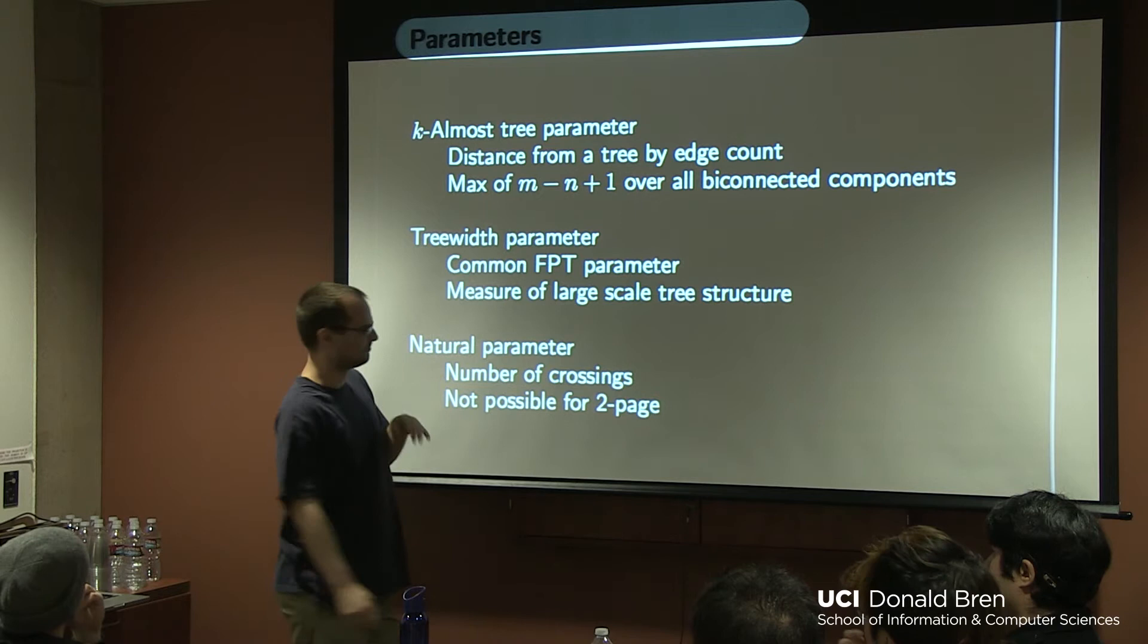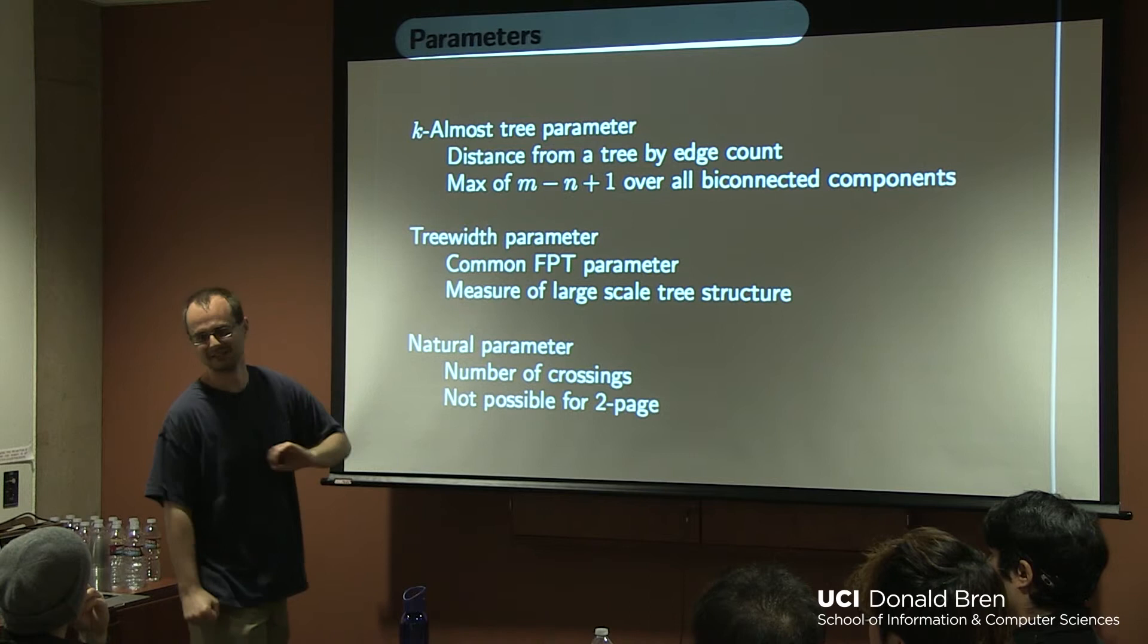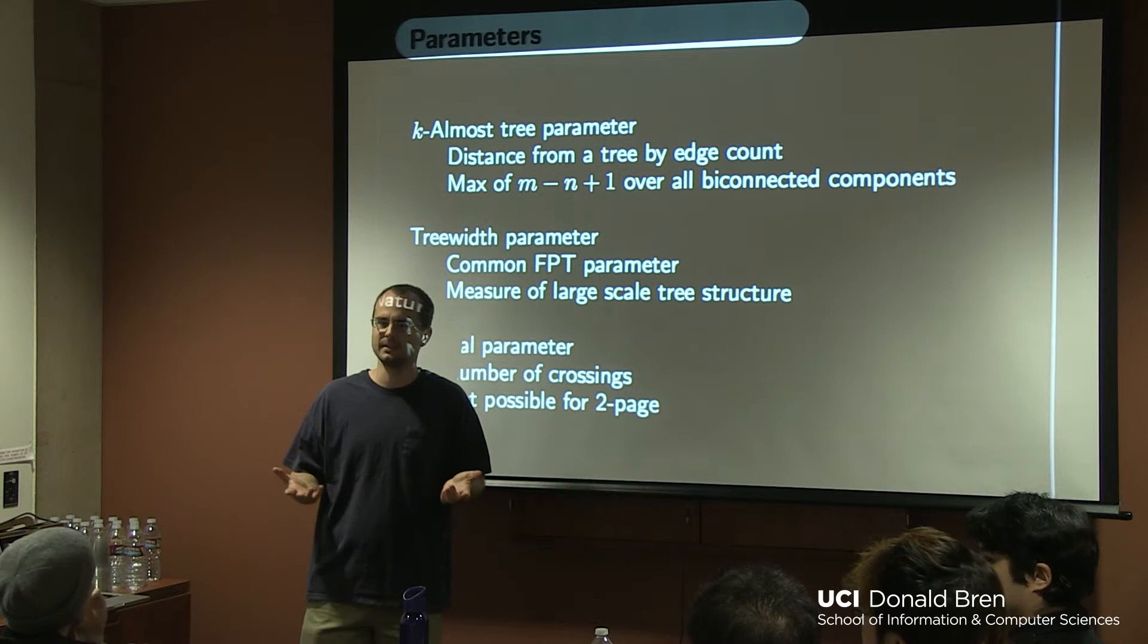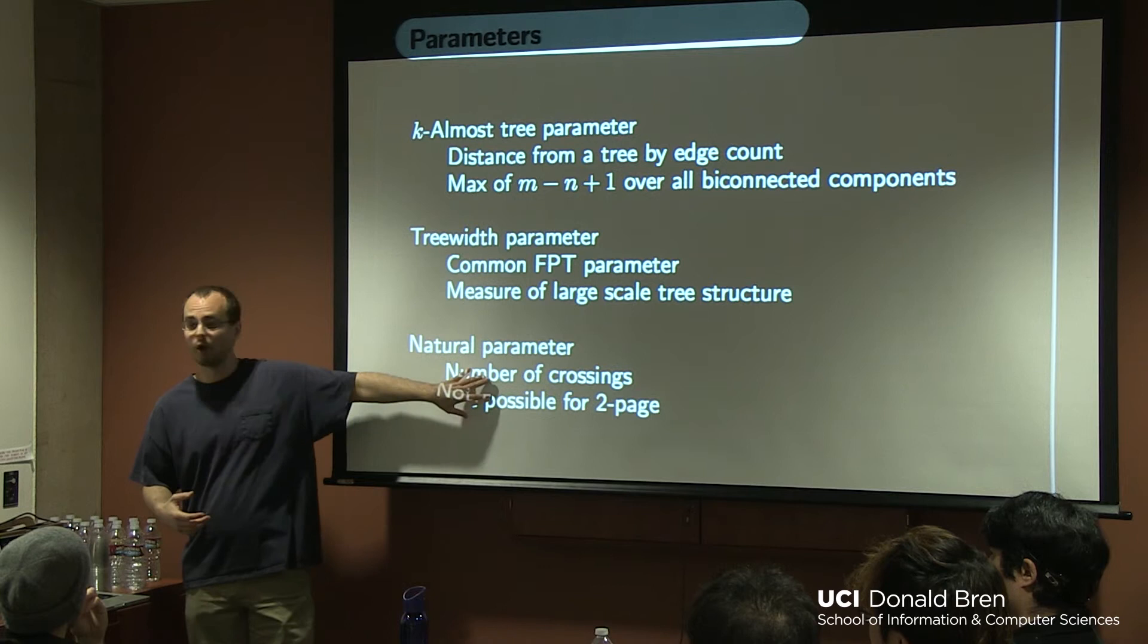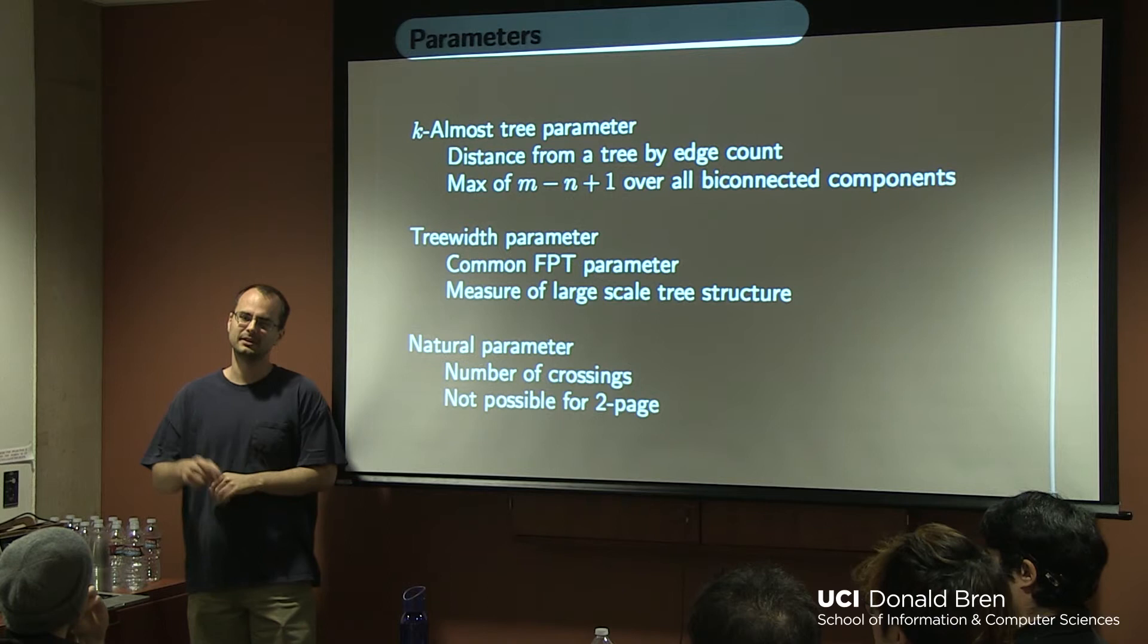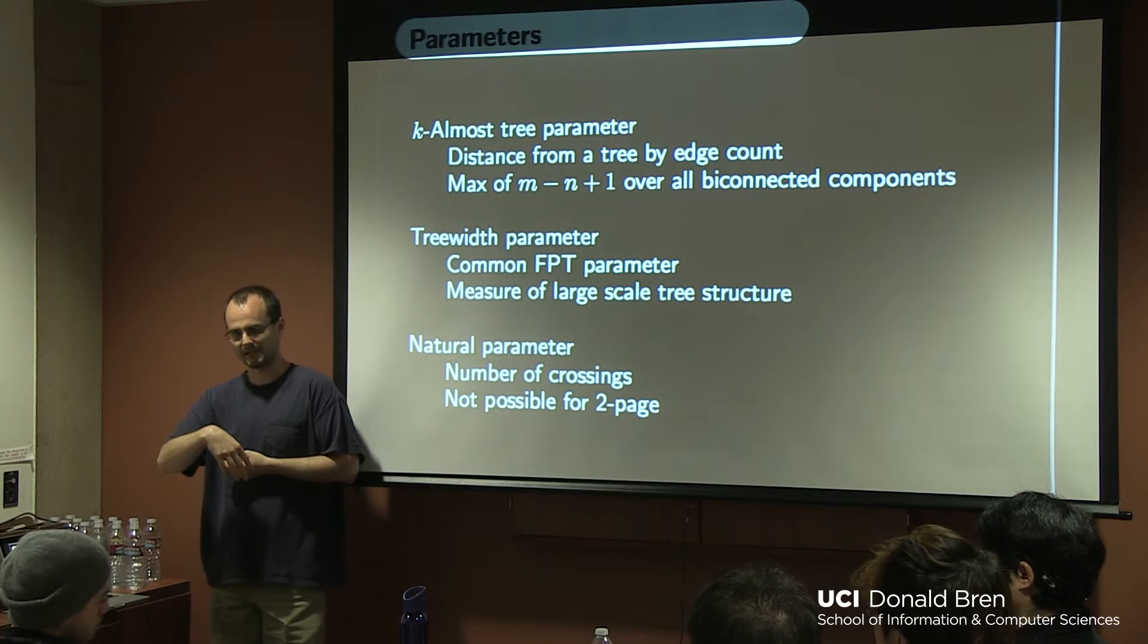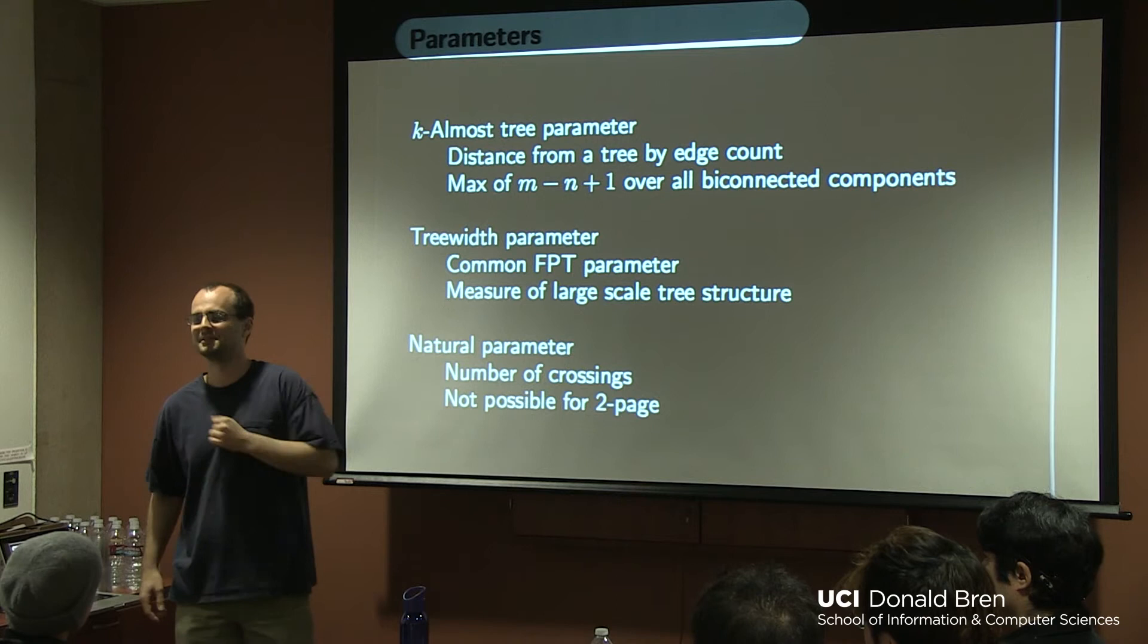The natural parameter: number of crossings. You've probably seen this before in one of your classes, output sensitive algorithms. That's what we're talking about here. If I parameterize by the number of crossings, I'm saying you only have to pay for what you find, in a sense. And so that's always what we desire. Not possible for two-page, because it would imply polynomial time for planarity. Zero crossings, plug zero into the parameter, get a polynomial time algorithm. Not possible if P does not equal NP.